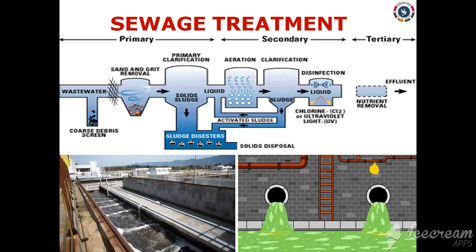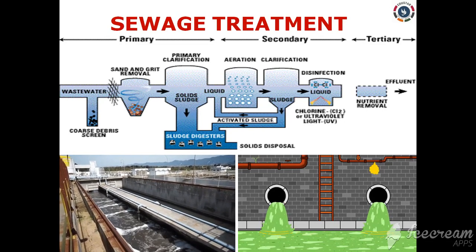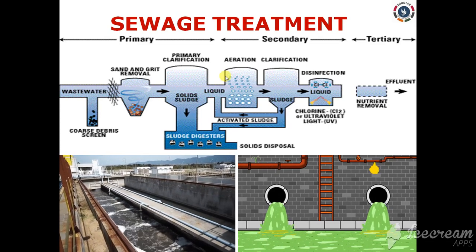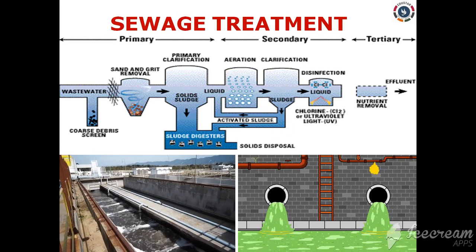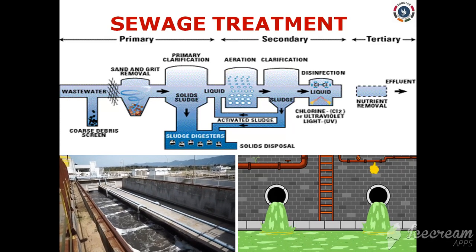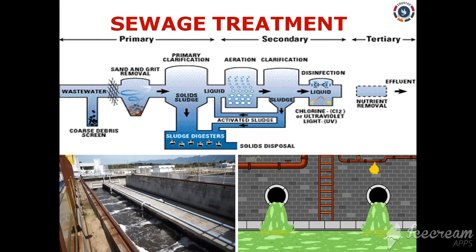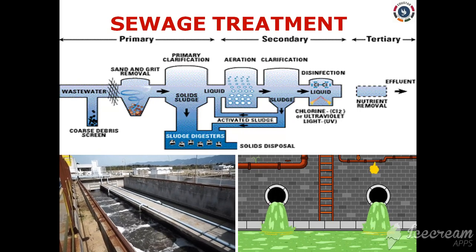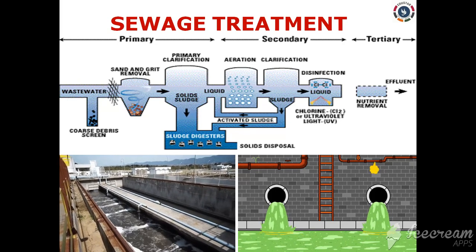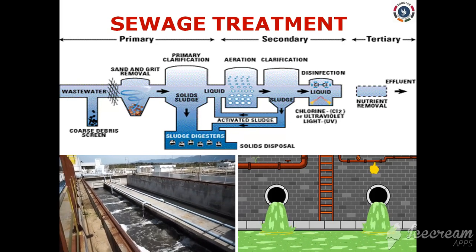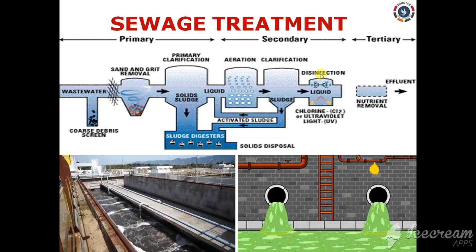The second method is sewage treatment. Dirty drain water containing domestic waste that comes from homes through underground pipes is called sewage. If left untreated and drained into rivers, it can pollute the river water. Therefore, prior to disposal, sewage must be treated at a sewage treatment plant before being discharged into the river. The organic matter in the sewage is digested in the sewage treatment plant to produce biogas and manure.